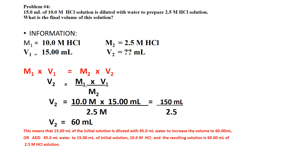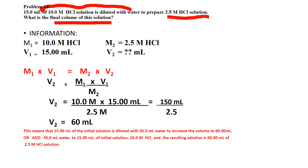Problem 4: 15 mL of 10 molar HCl solution is diluted with water to prepare a 2.5 molar HCl solution. Water is added to 15 mL of the initial concentration. The question asks: what is the final volume of this solution? Note that the volume of water added is not given, so we calculate V2 using the equation.